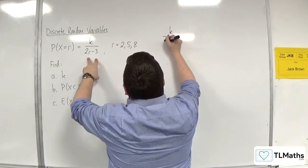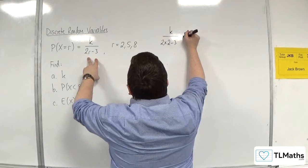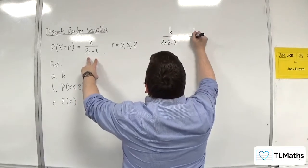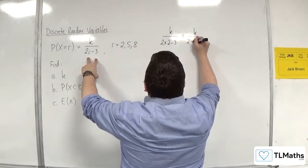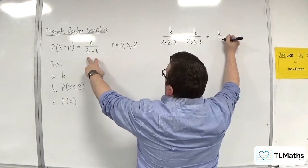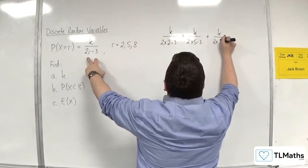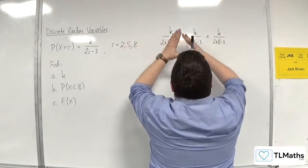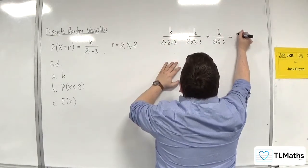k over 2 times 2 take away 3, plus k over 2 times 5 take away 3, plus k over 2 times 8 take away 3, those three probabilities have got to add up to 1.